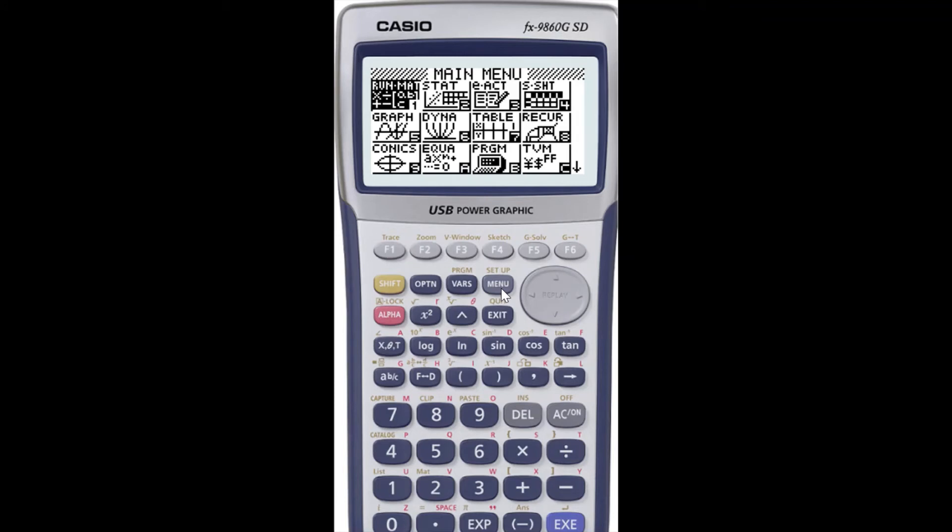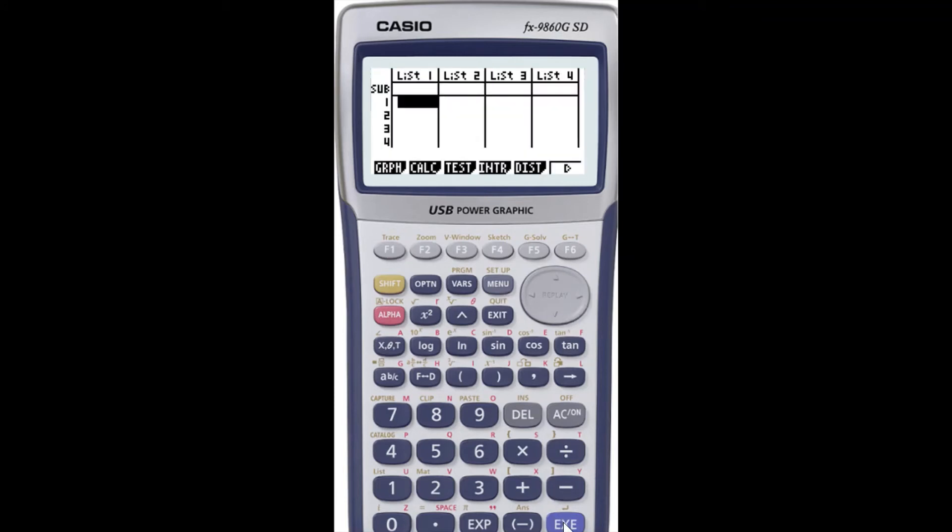From the menu, you click Stats menu, then Enter. Make sure you empty the field. I'm going to click F6, Delete All. It's asking you to confirm that, so F1 Yes.